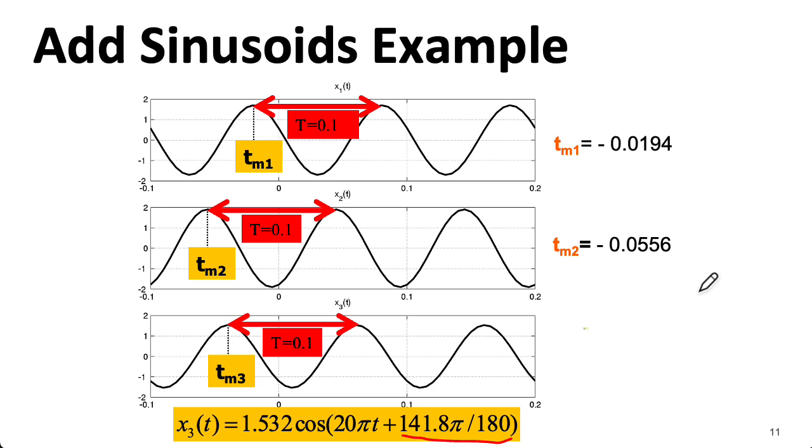So phasor addition gave us the phase of the resulting sinusoid summation. To make the plot, we need to figure out what peak that might correspond to. So here we invert the formula we used earlier and write minus my phase φ, but we're going to divide it now by the frequency ω in radians per second, which gives us a peak that's located here. Our amplitude is around 1.5, which is around here.